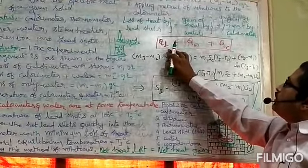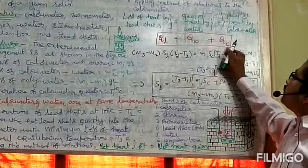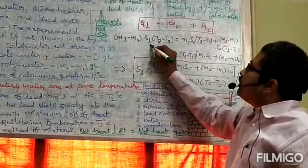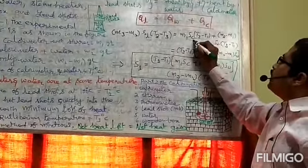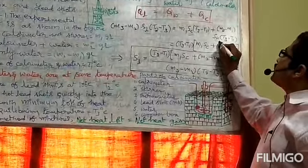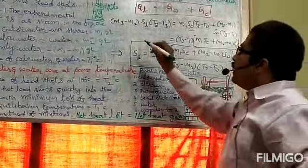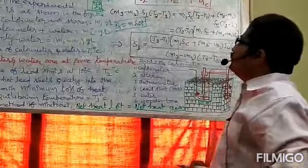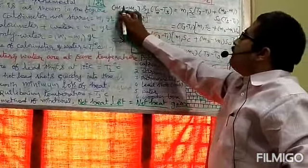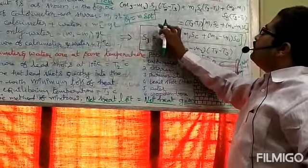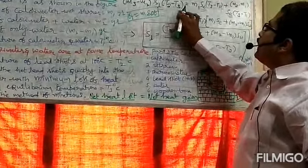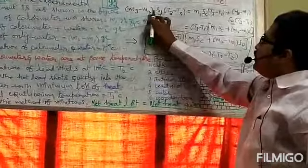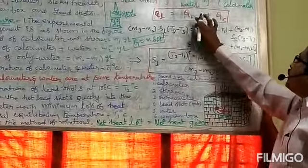Loss of heat by lead shots QL equals gain of heat by water QW plus gain of heat by calorimeter QC. That is QL = QW + QC. Let the specific heat of lead shots be SL, specific heat of calorimeter be SC, and specific heat of water be SW. Applying the main formula Q = MS·ΔT: mass of lead shots is M3 minus M2, specific heat SL, temperature difference T2 minus T3. So QL = (M3 − M2) × SL × (T2 − T3), which equals QW + QC.